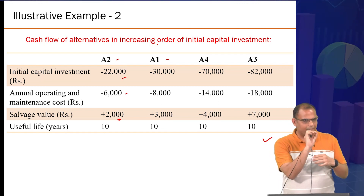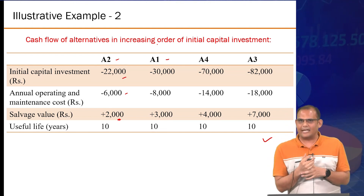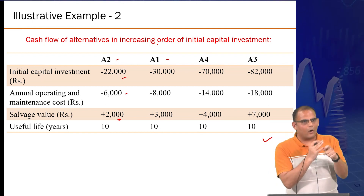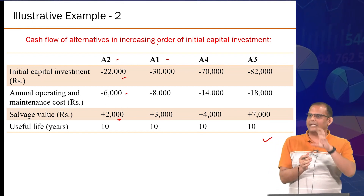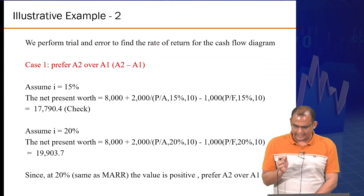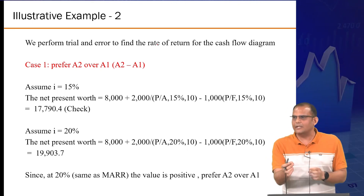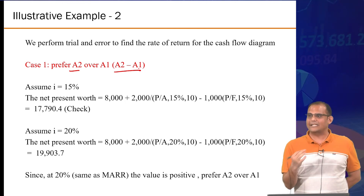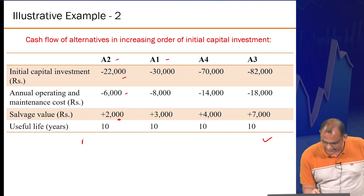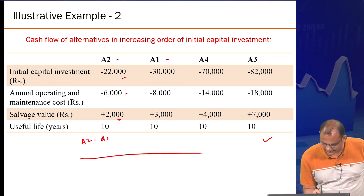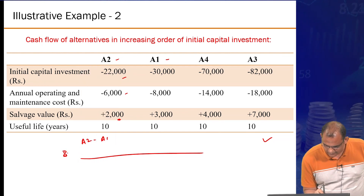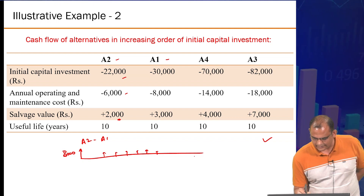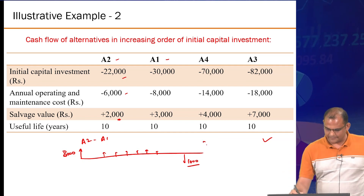The incremental series of A2 minus A1 comes out to: 8,000 rupees positive at year 0, then 2,000 rupees positive annually, and then a salvage value difference of negative 1,000 at the end. This becomes your incremental cash flow series. You calculate the IROR — the incremental rate of return — for this series, and it has to be at least greater than MARR.